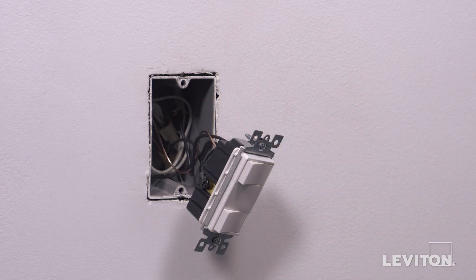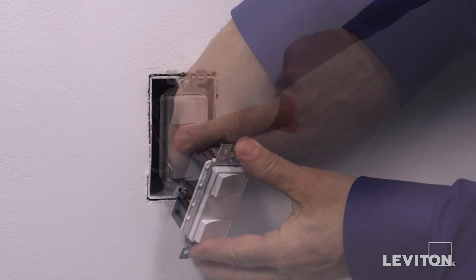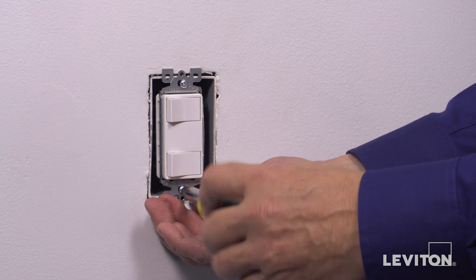The device is now terminated. Carefully position all wires to provide room in the wall box for the device. Mount the device in the wall box with the mounting screws provided.